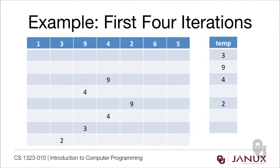Our next iteration is putting 2 in the correct position. So 2 gets moved over to temp. Now 9, 4, and 3 are all going to move over one position because 2 is smaller than those values, and then 2 gets moved back into position.